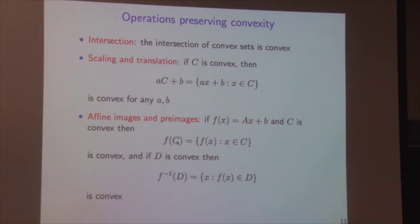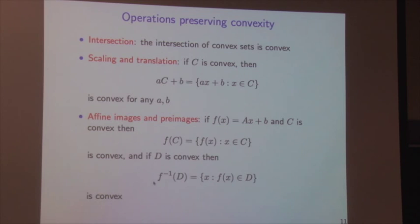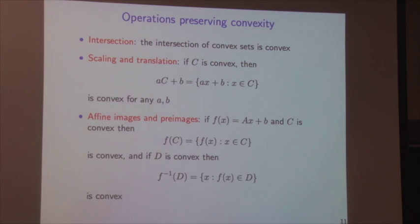Strong convexity implies strict convexity, which in turn implies convexity. These properties come up especially when discussing convergence of algorithms. The first homework will have you prove equivalences and characterizations for strongly convex functions. The analogous definitions for concave functions follow by substituting −f.